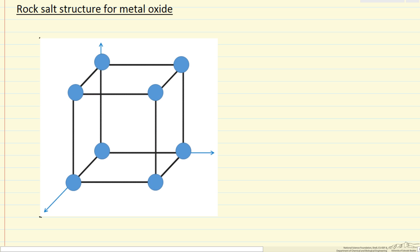I'm going to describe the rock salt structure, which is a crystal structure that some metal oxides have. For example, iron oxide, FeO, has the rock salt structure.